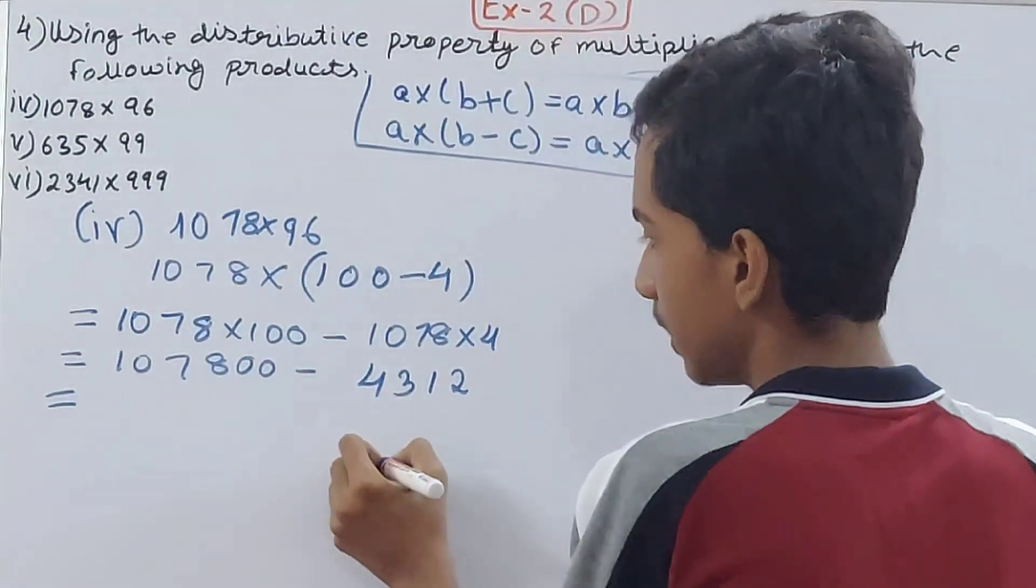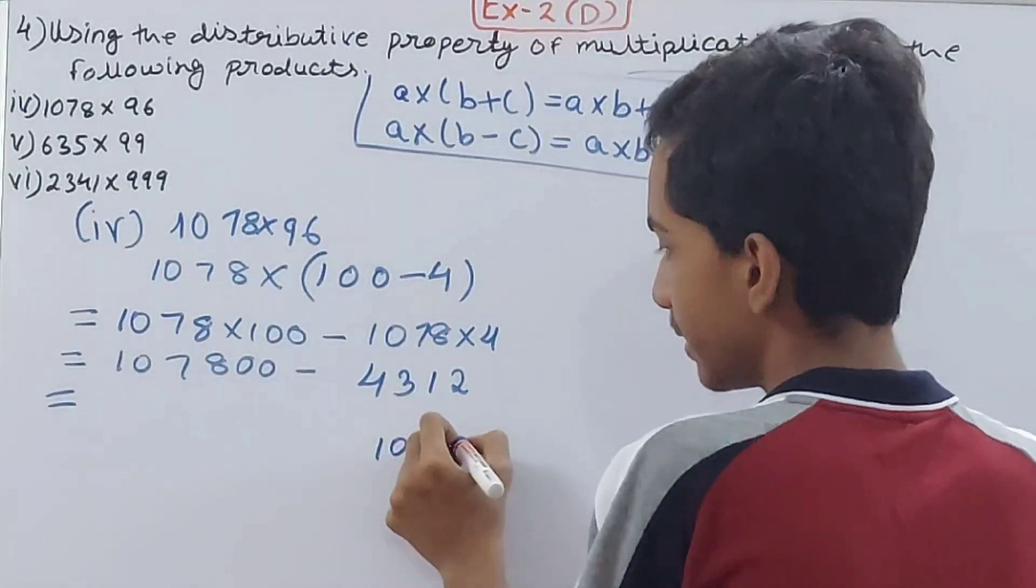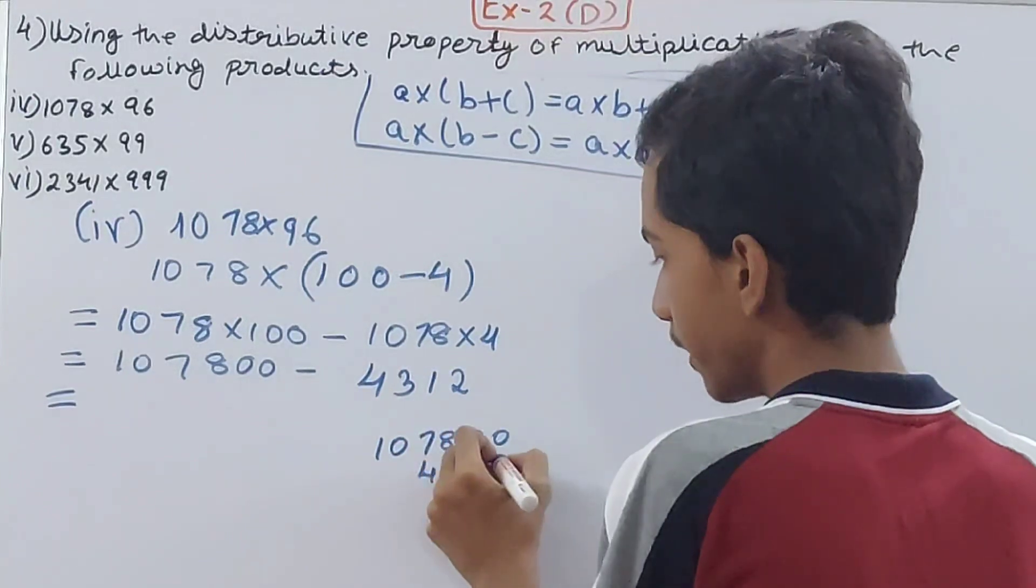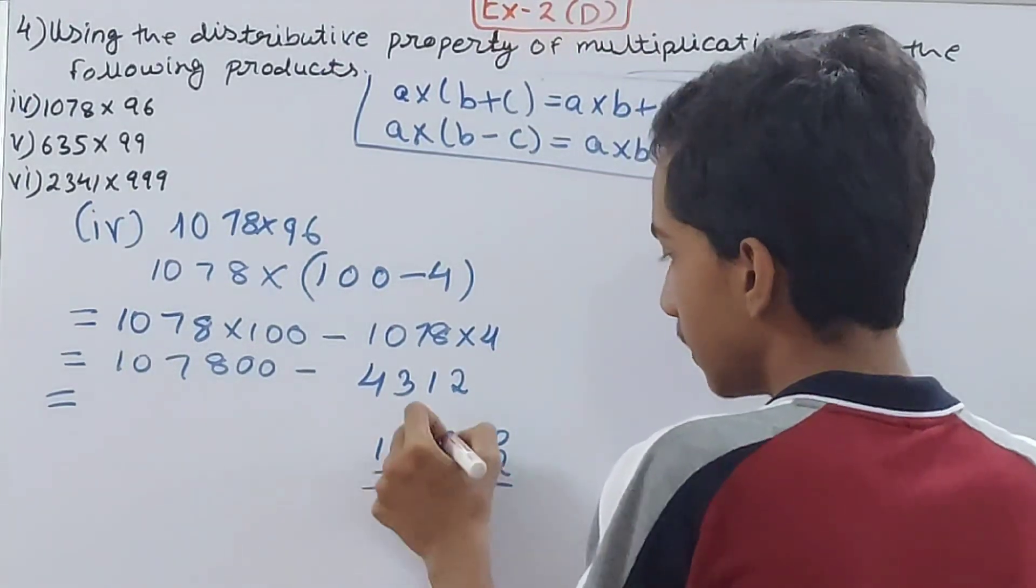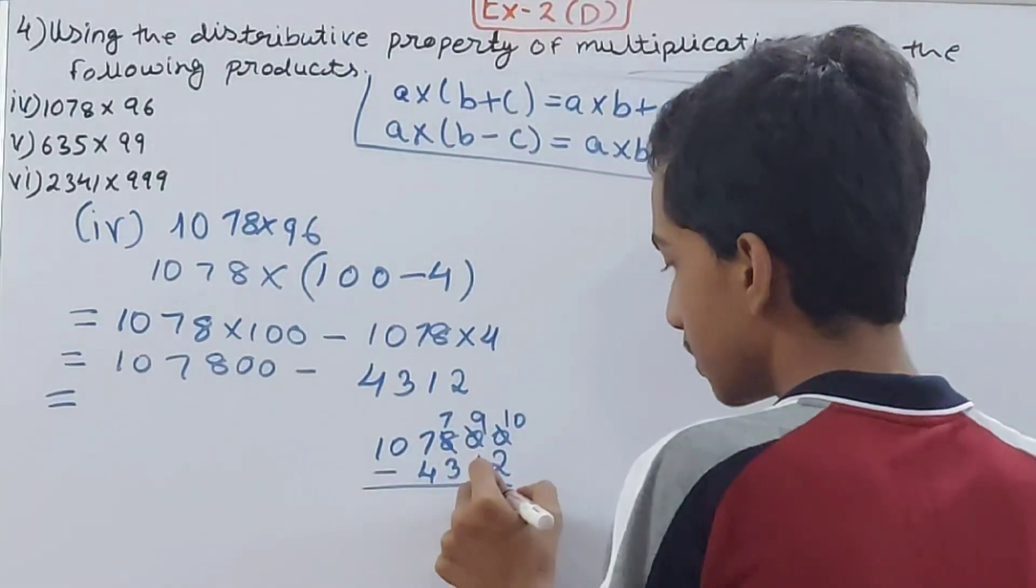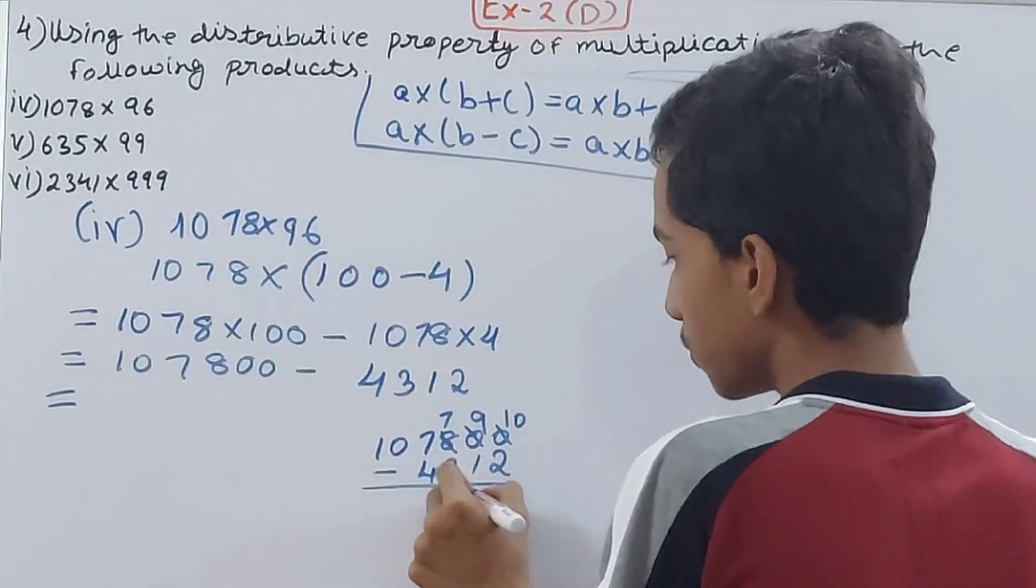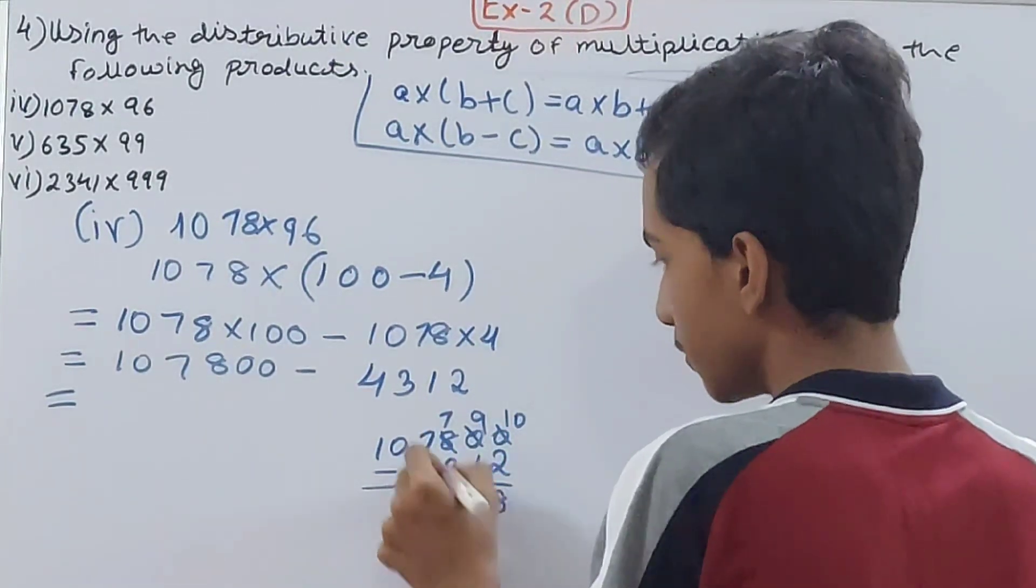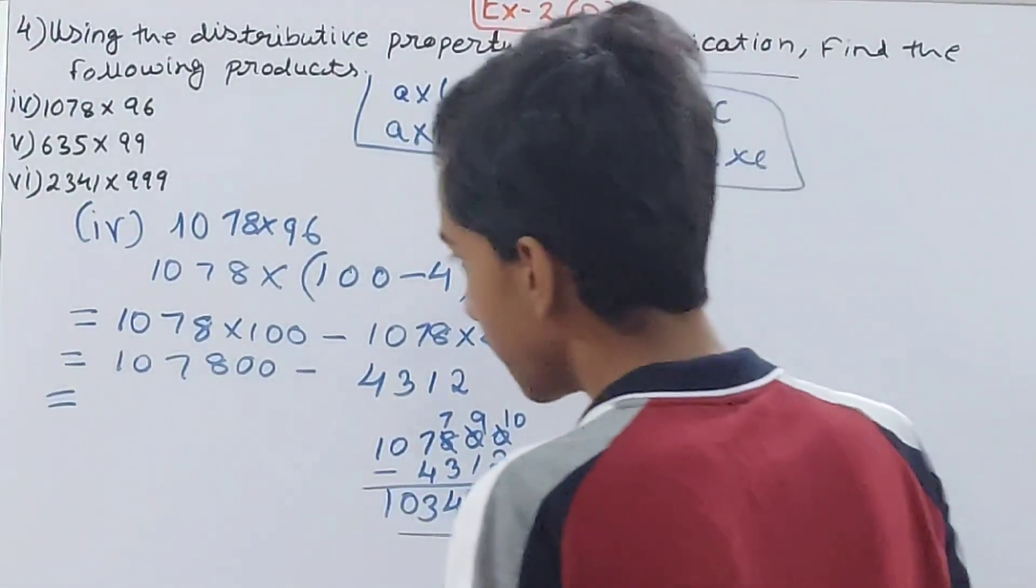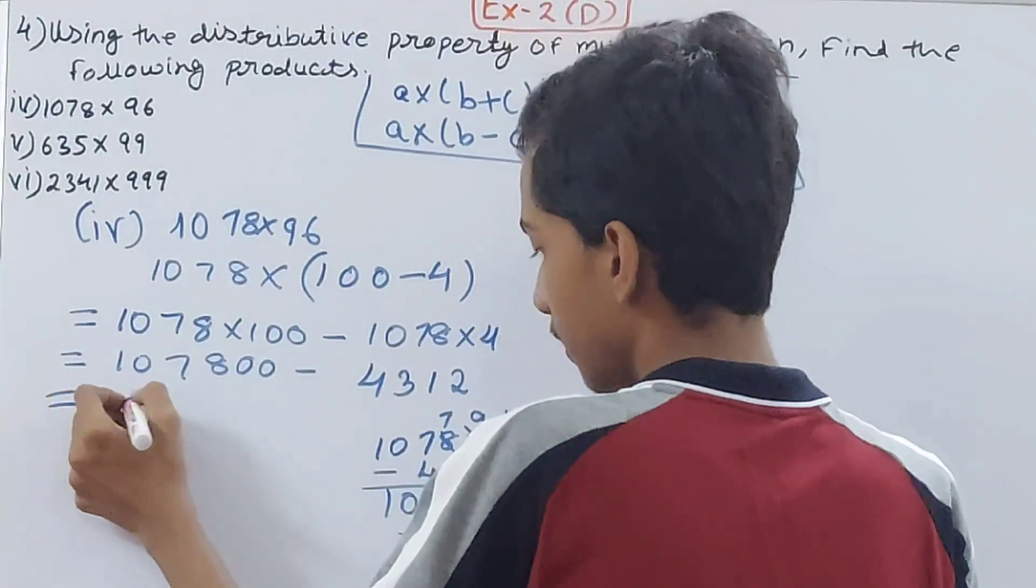Let's subtract: 107,800 minus 4,312 equals 103,488.